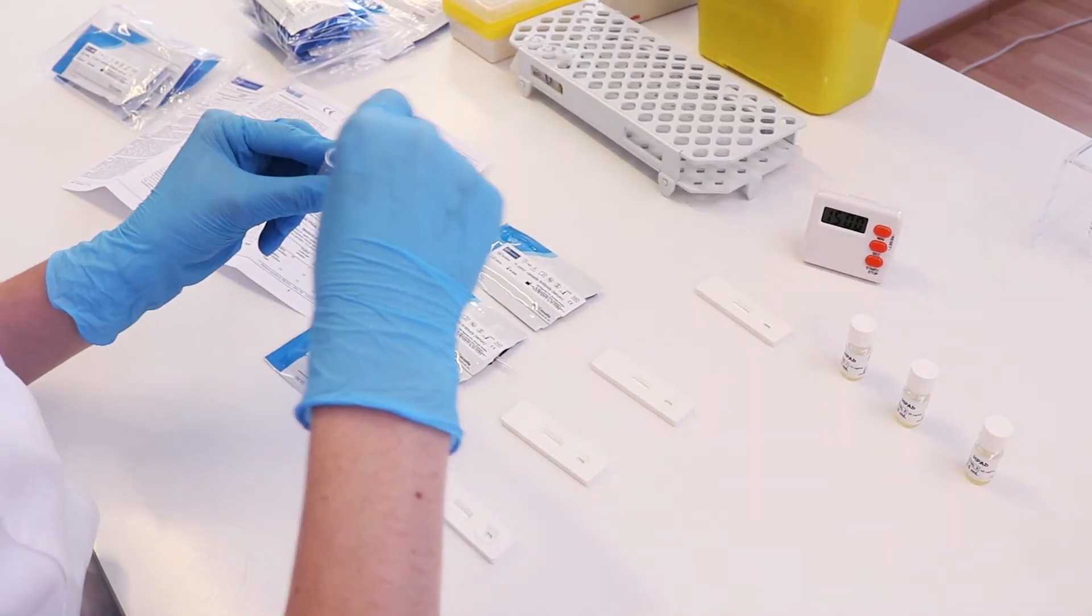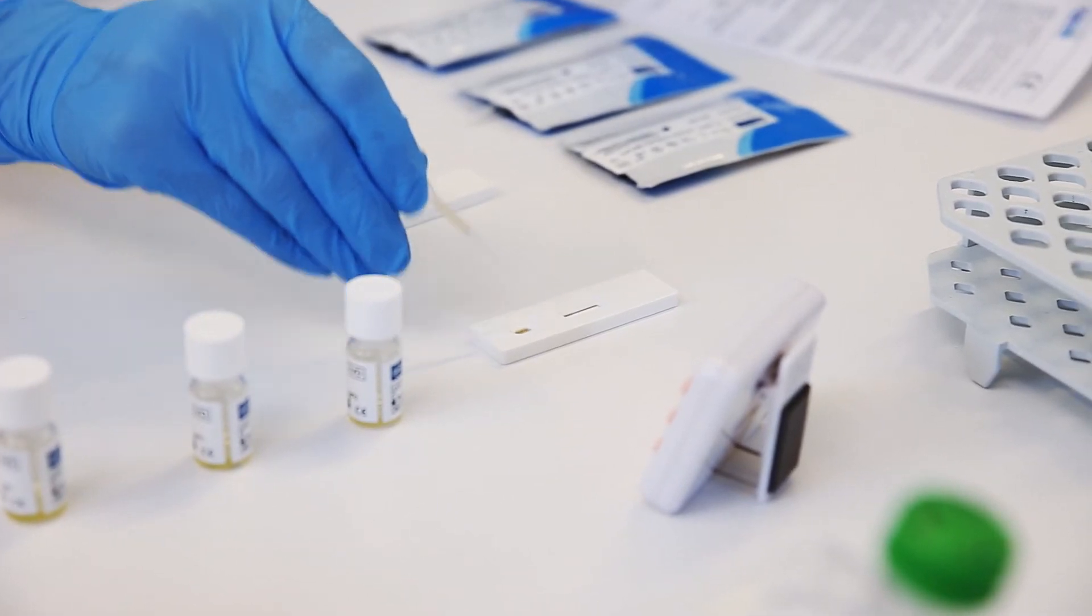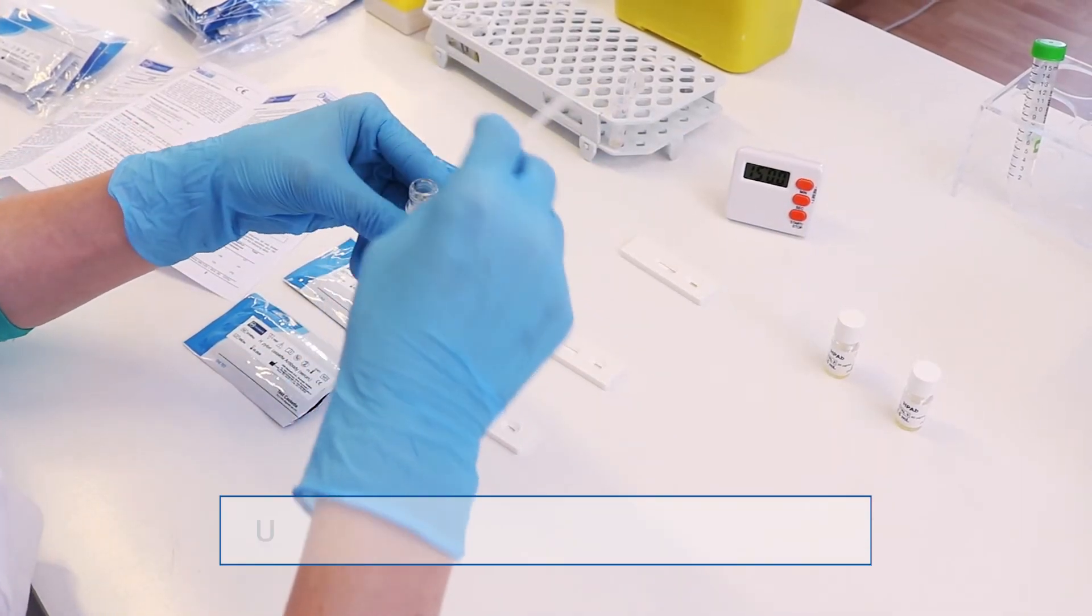With a dropping pipette, add 2 drops of negative patient serum sample into the sample well.